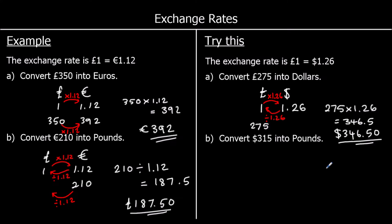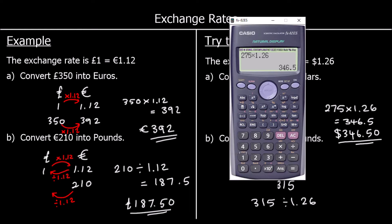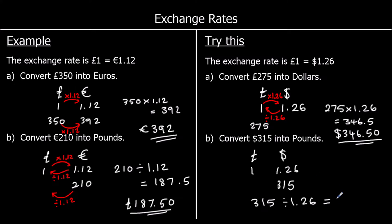Part B: convert $315 into pounds. We've got the same exchange rate. This time we've got $315 and we're going back to pounds, so it's divide by 1.26. 315 divided by 1.26 is 250, so it's 250 pounds.